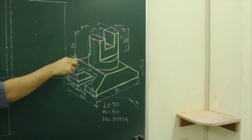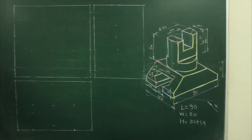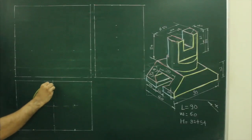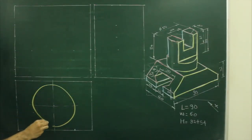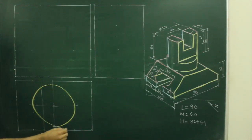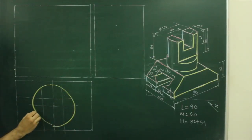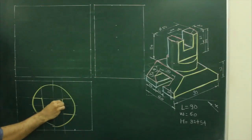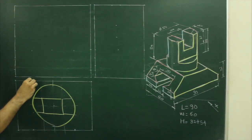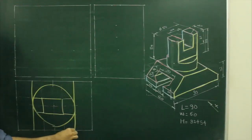First we will draw the top view. In this case, first you draw the layout and then you can mark the center and draw the circle. After that, they have given 24. So we will take 12 from both the sides and draw a line. Then they have given 20, so we can take 10 from both the sides and draw in this portion. These two lines will also be done. So this much portion is done.